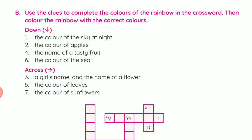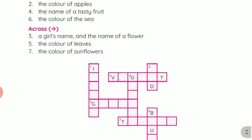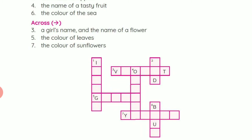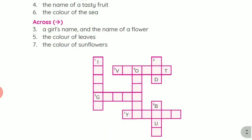First we will see the down side. Here you see this one — it starts with I and G is there also, so here will be indigo: I-N-D-I-G-O. Next, the color of an apple — that is red: R-E-D. Fourth: orange — O-R-A-N-G-E. Six, the color of the sea: blue — B-L-U-E.